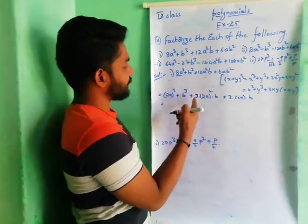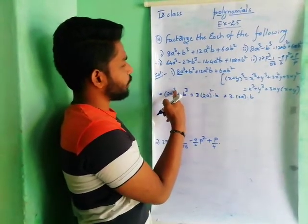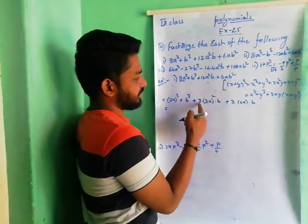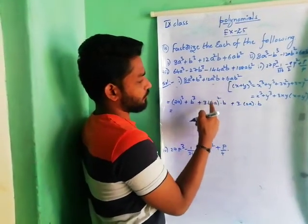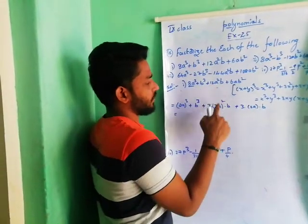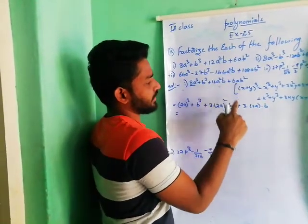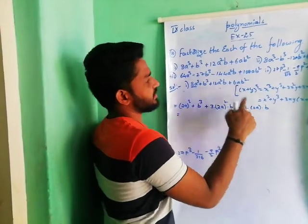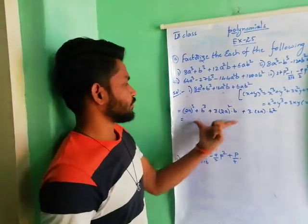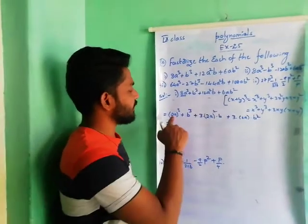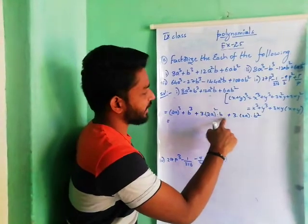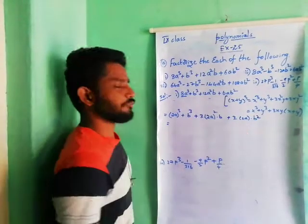So simply we observe: (2a) whole cube gives 8a cube; b cube gives b cube; 3 into (2a) square into b — 2 squared is 4, so 3 into 4 is 12 — gives 12a square b; plus 3 into 2a into b square gives 6ab square. So this total expansion looks like the format x cube plus y cube plus 3x square y plus 3xy square.